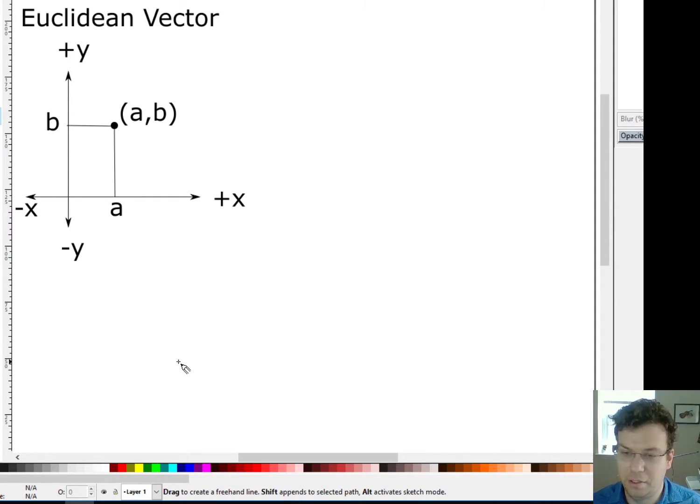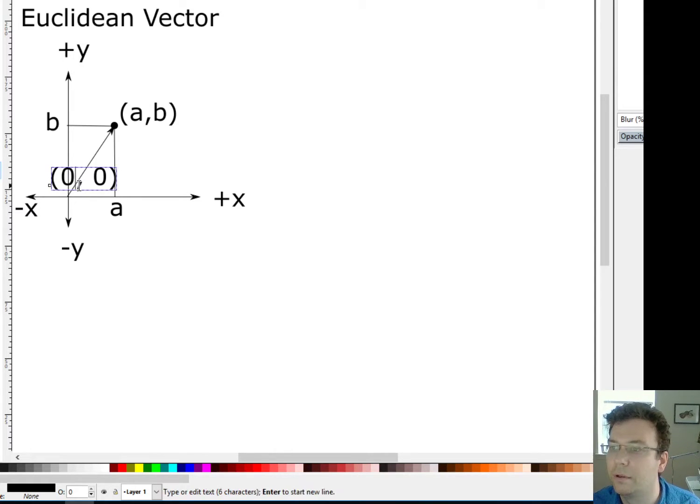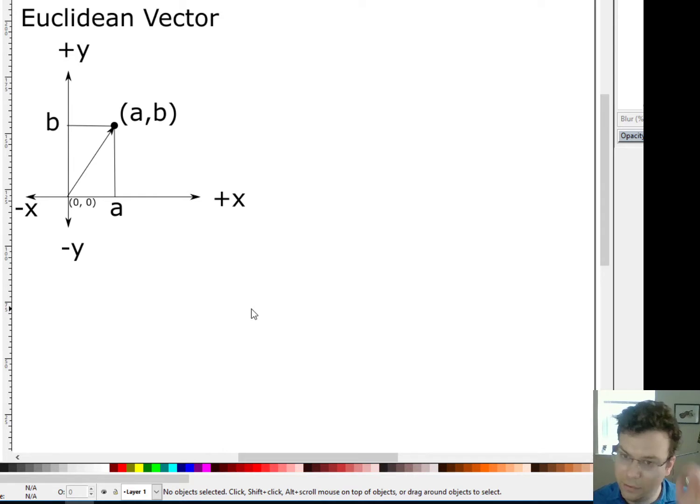Now actually, a Euclidean vector is really the same thing, we just think about it a little bit differently. So we're still in the Cartesian grid, but what we're going to do instead is we're going to draw an arrow from the origin here up to that point (a, b). And we're going to give it an arrow. So a vector is an arrow which has a length and a direction. So it's another way of looking at this information of an ordered pair. So it starts at the origin (0, 0). Right, that's the origin there.